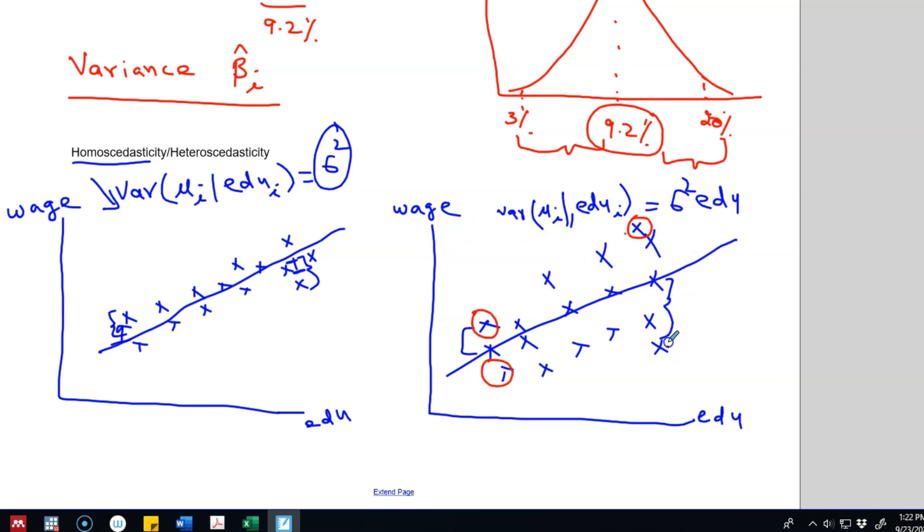For example, these could be teachers, more education but their wage level is low, and these could be people working in, say, Wall Street. So see there's more variability in the estimated effect of education on wages as people are getting more education. So this is what this heteroscedasticity is trying to show us, that the variance depends on the education level.